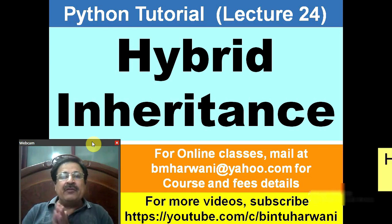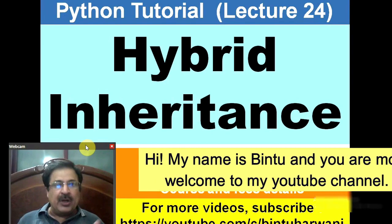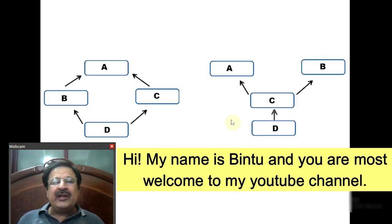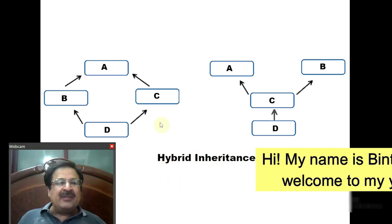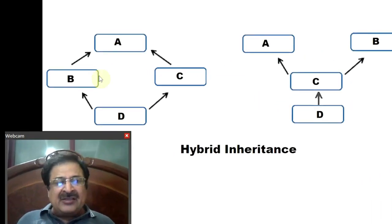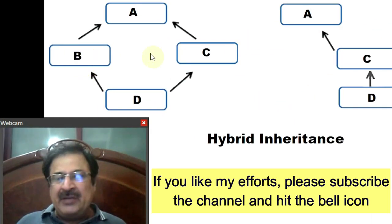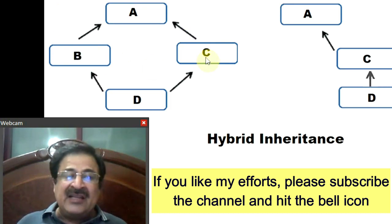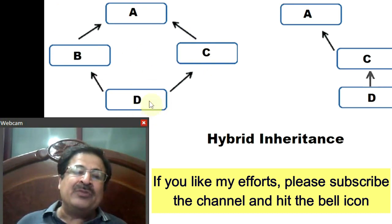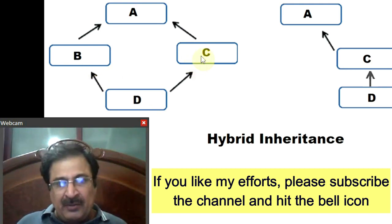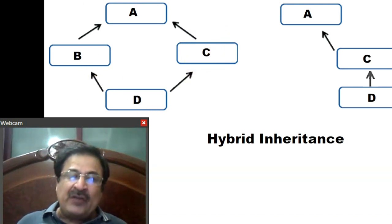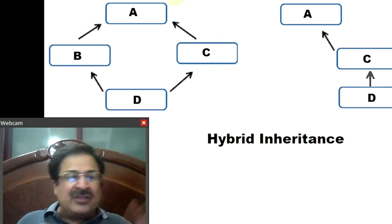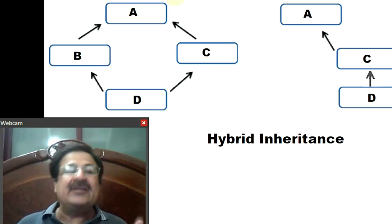In this lecture, we will learn about hybrid inheritance. By the name only, it is clear that hybrid means mixing of a few inheritances. Here is an example: class A has been inherited by two classes B and C — that is hierarchical inheritance. And these B and C classes are inherited by another class D — that is multiple inheritance. So it is a mix of hierarchical and multiple inheritance, and this mixing is called hybrid inheritance.